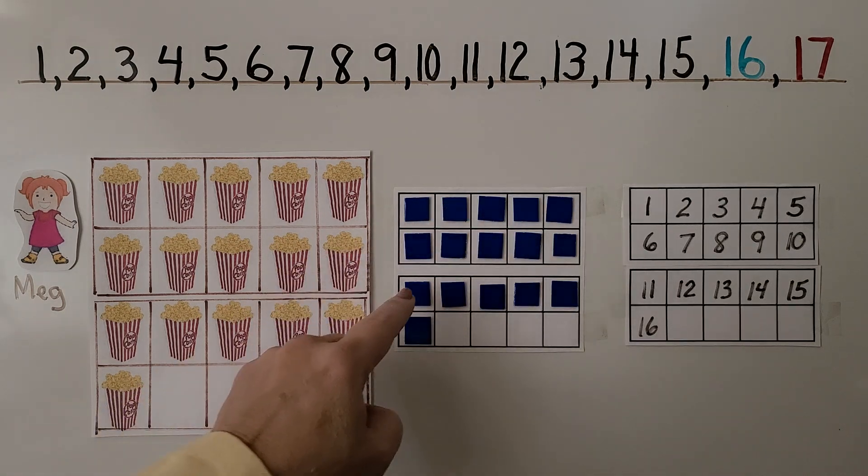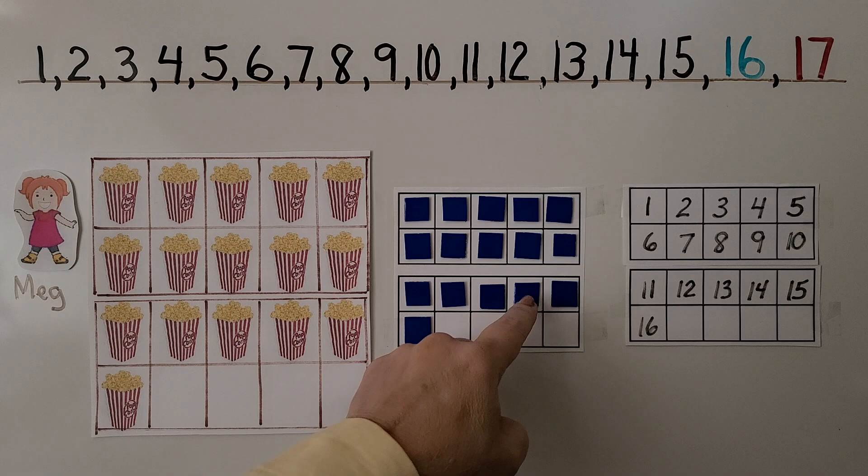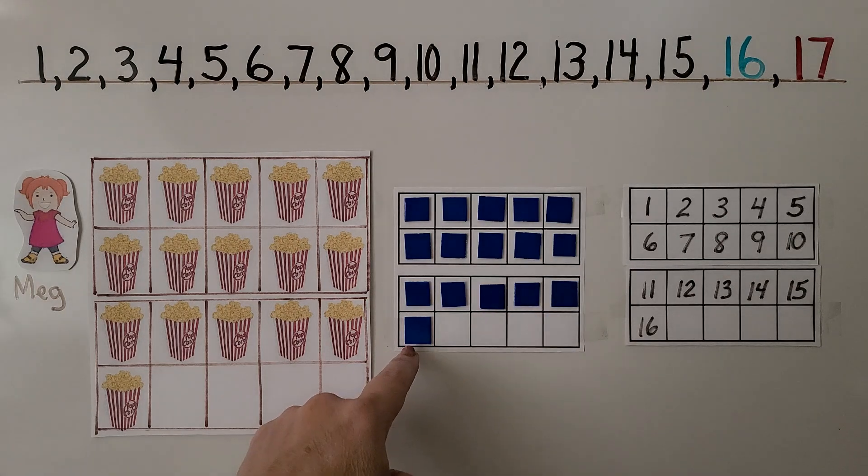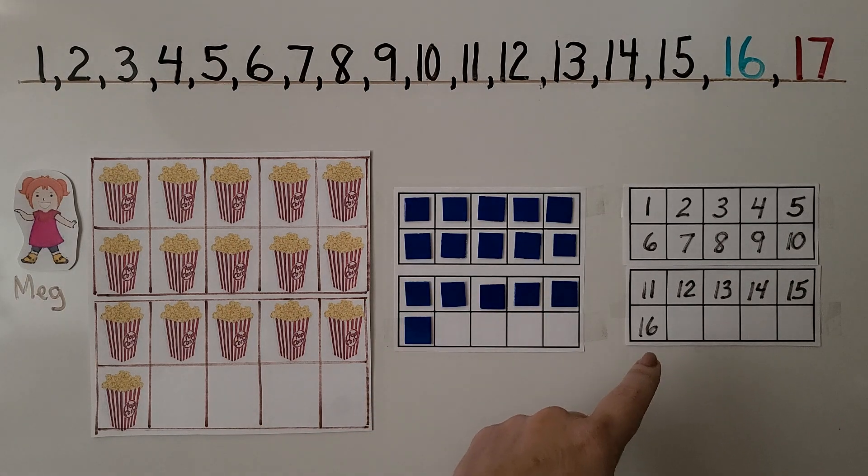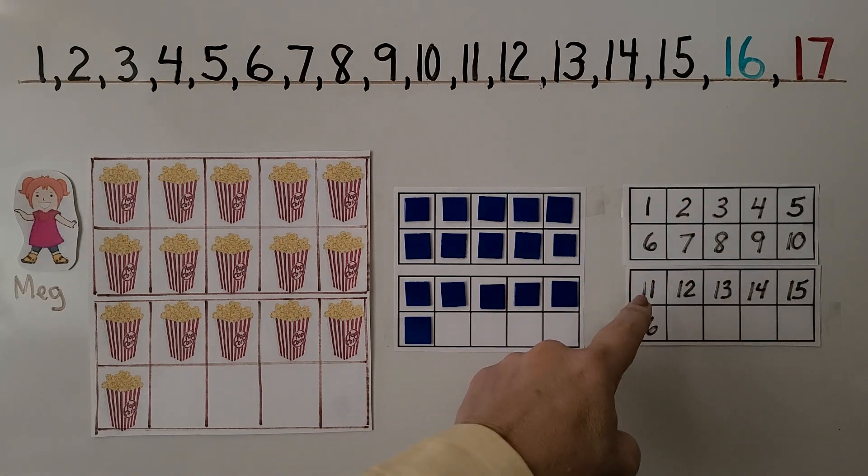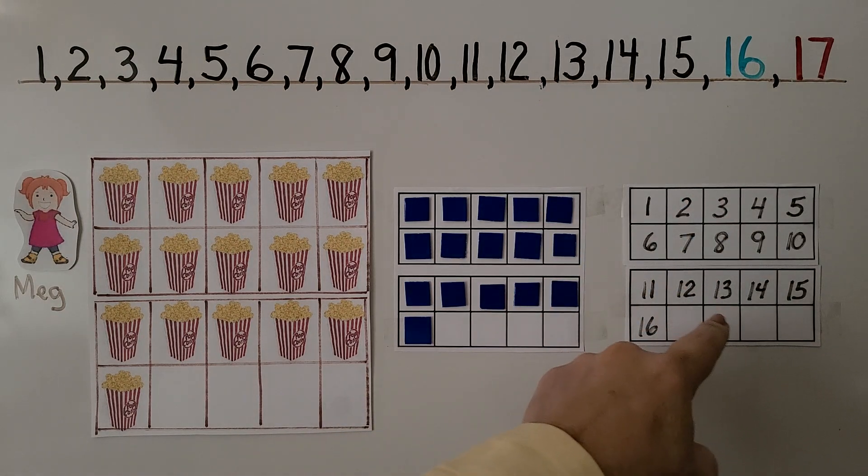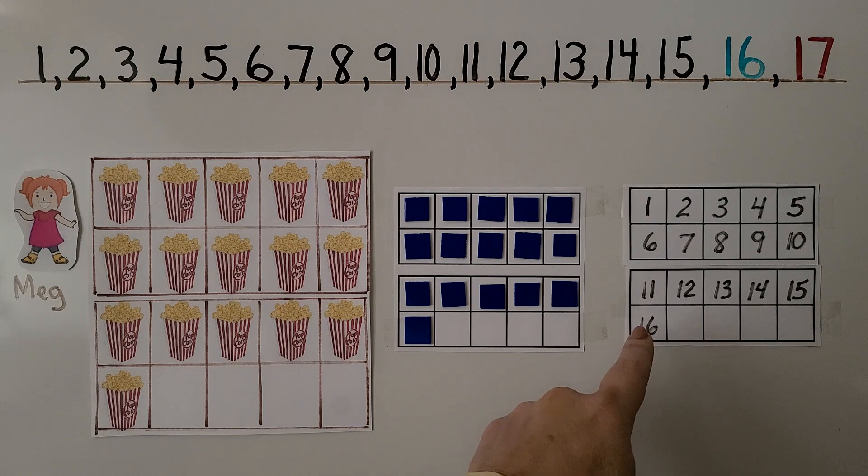So we have 10, 11, 12, 13, 14, 15, 16. So if we saw the numbers on the 10 frame, that's 10, that would be 11, 12, 13, 14, 15, 16.